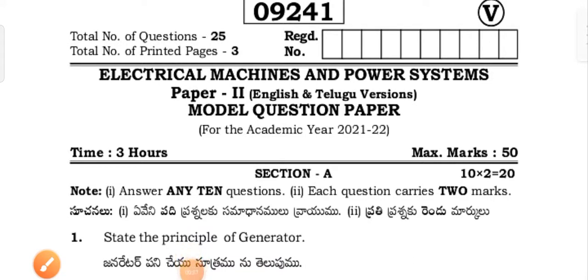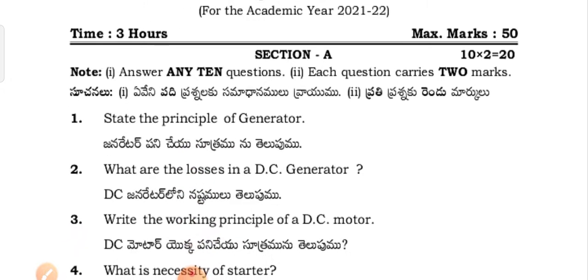Hi guys, welcome to my channel. In this video I am going to show the model question paper for ET students for the second year of Telangana, Paper One: Electrical Machines and Power Systems. This paper is for Telangana students — ET, Electrical Technician — second year, Paper One: Electrical Machines and Power Systems. Let me see the question paper section here.